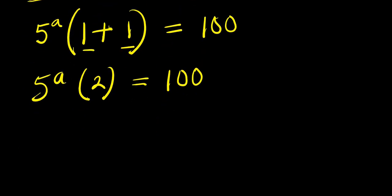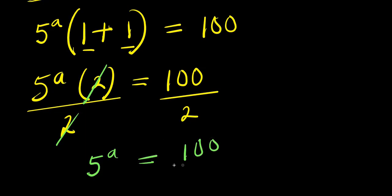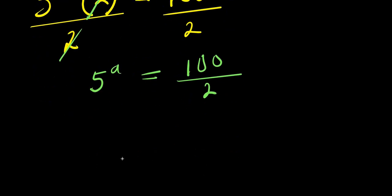So from here, I can divide both sides by 2. I have 5^a equals 100 divided by 2, and 100 divided by 2 is 50, so I have 5^a = 50.